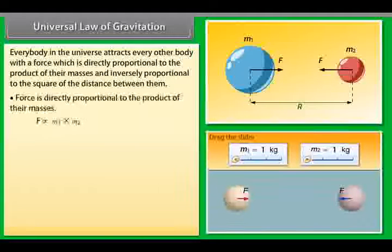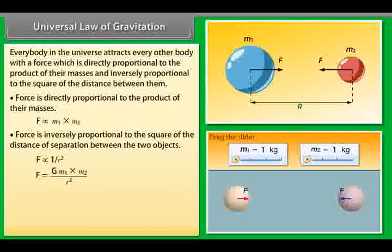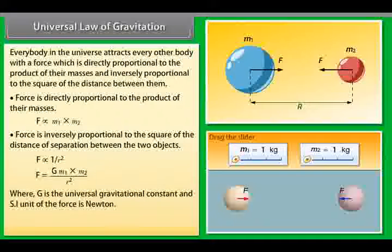Force is directly proportional to the product of their masses. Force is inversely proportional to the square of the distance of separation between the two objects. G is the universal gravitational constant and its SI unit is Newton meter square per kilogram square.